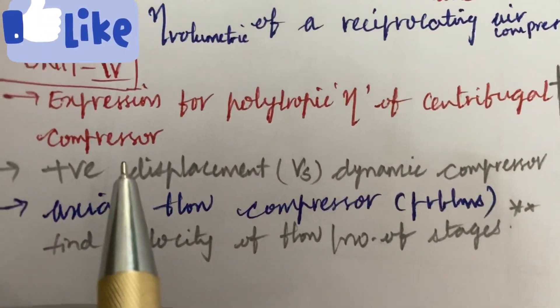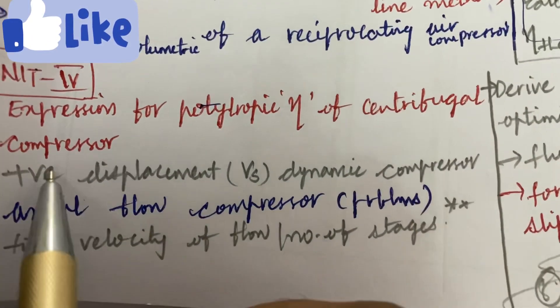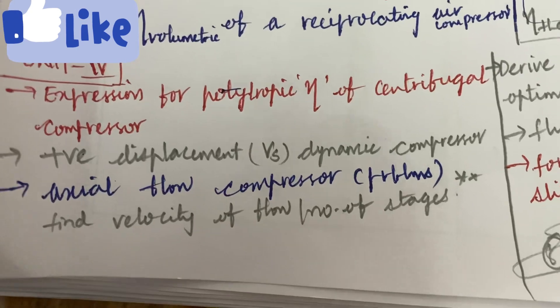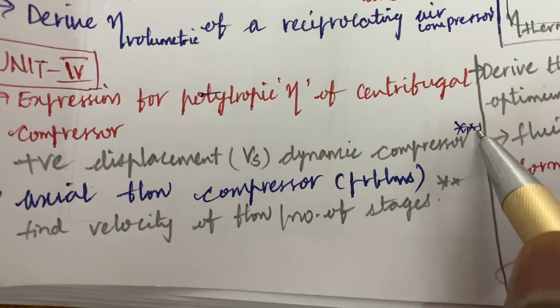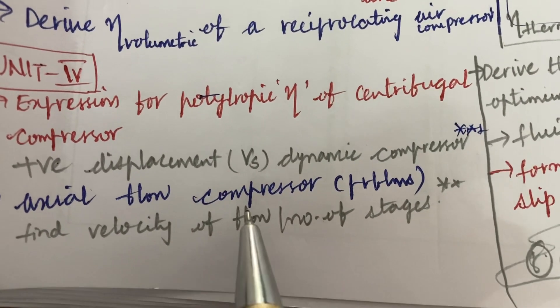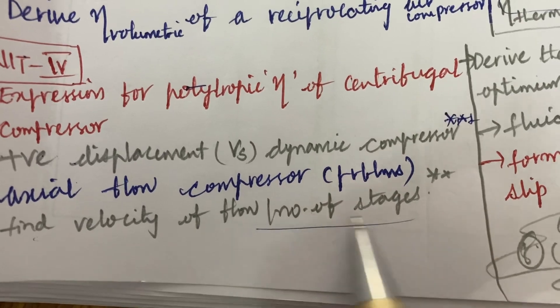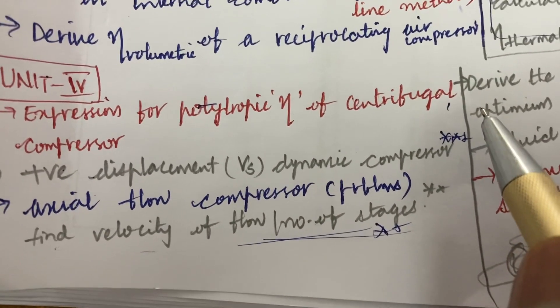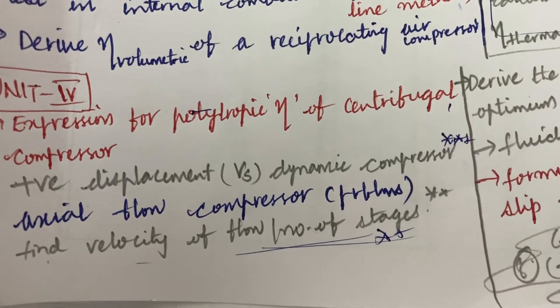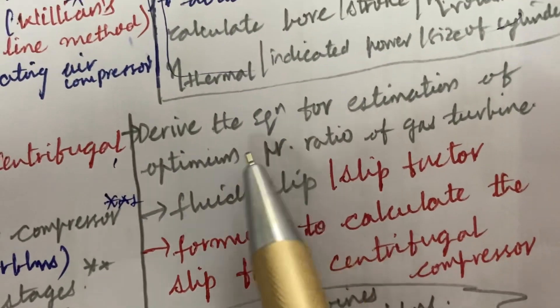Later, let's look into the fourth unit. Expression for polytropic efficiency of a centrifugal compressor and the differences between the dynamic compressor and positive displacement compressor is one of the very important and gunshot question. The actual axial flow compressor problems will be asked to find the velocity of the flow and the number of stages. This may be also one of the very important and gunshot question. From the fourth unit, as per the COVID pattern, you are going to get only one question. We can expect one theory in the A part as well as B part may be the problem.